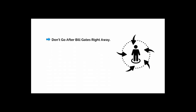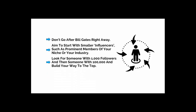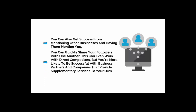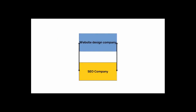A tip: don't go after Bill Gates right away. Instead, aim to start with smaller influencers such as prominent members of your niche or your industry. Look for someone with about a thousand followers and then someone with a hundred thousand followers, and build your way up to the top. You can also get great success from mentioning other businesses and having them mention you — that way you can quickly share your followers with one another. This can even work with direct competitors, but you're more likely to be successful with business partners and companies that provide supplementary services to your own. If you build websites, then looking for an SEO company and promoting each other is a good strategy. Again, aim for people who are on a similar level to you to begin with.